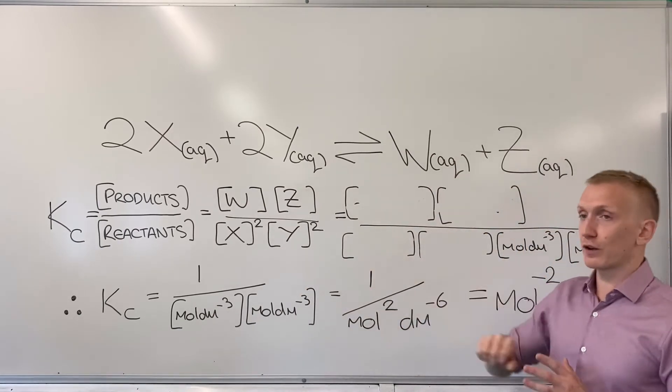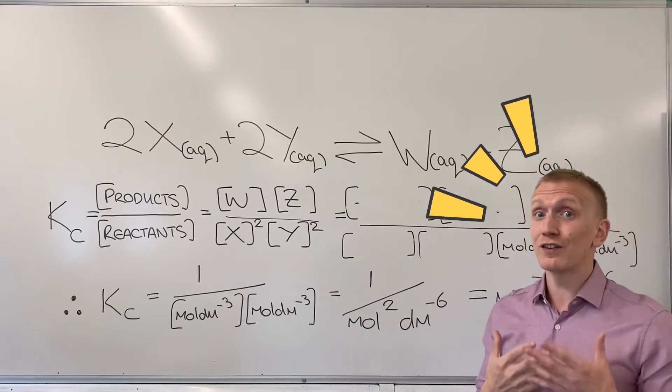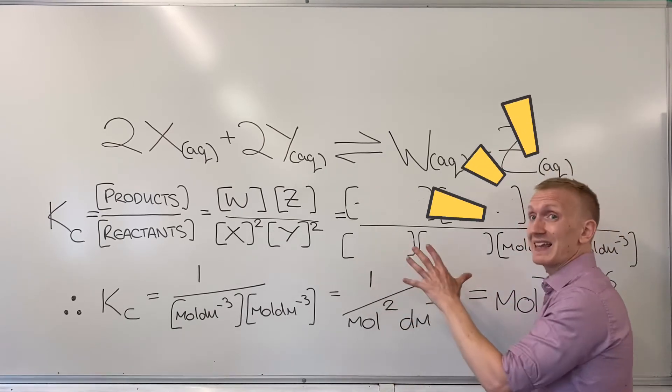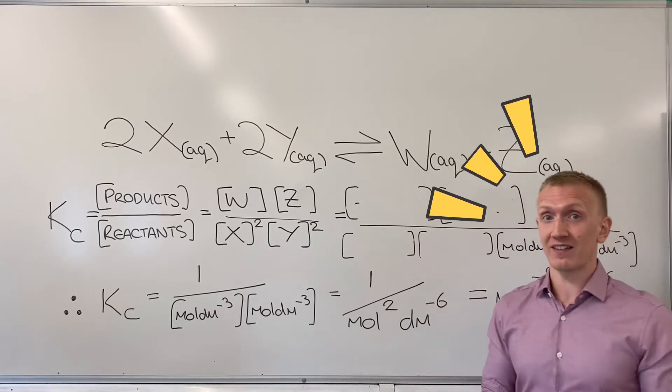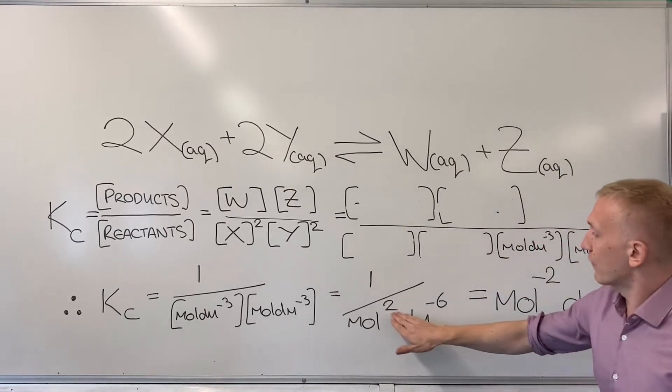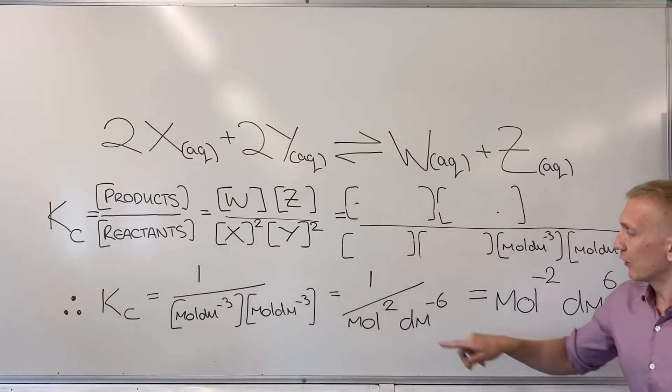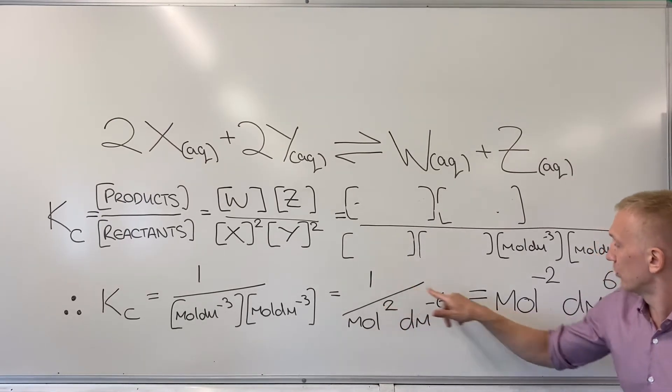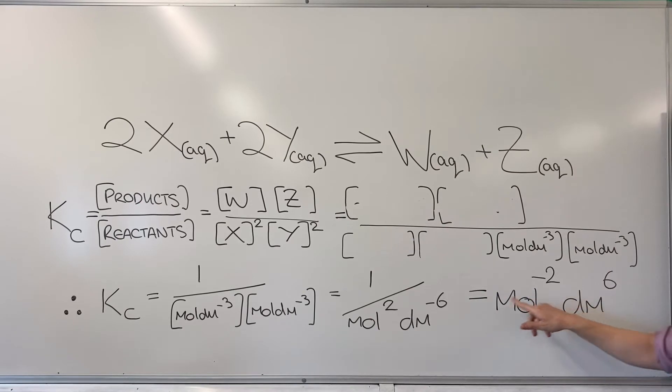I then want to move this up to the top line. You do need to do this. You can't leave it like that. It's not a finished answer. And so when I move things up to the top I'm going to reverse the sign on the power. So the squared here becomes minus two and the minus six just becomes a six.